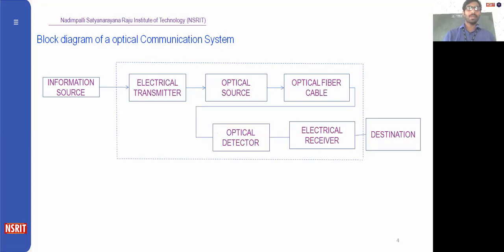Now let us observe the optical communication system block diagram. The first block is the information source, which contains any device that can produce voice or video signals or messages. This information source is provided to an electrical transmitter, where a carrier signal is added in order to change the frequencies or amplitudes to provide different modulation. This modulated signal is then provided to an optical source — generally optical sources involve laser diodes and light emitting diodes.